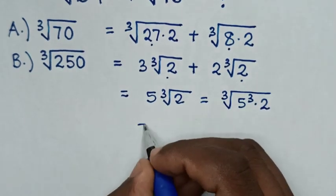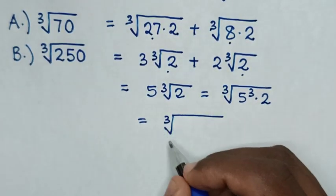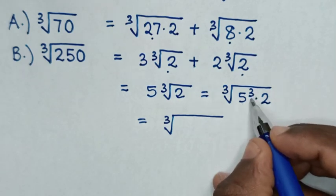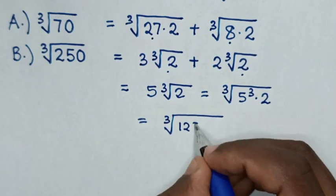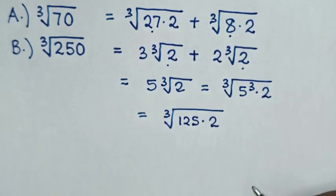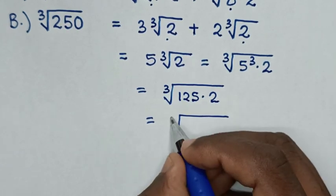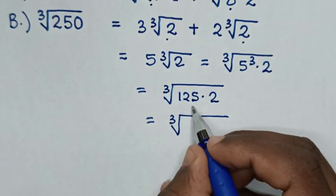Then in the next step, it will be equal to cube root of—5 cubed is 125—then times 2. Then it will be equal to cube root of 125 times 2.